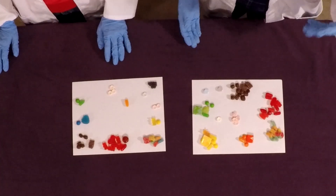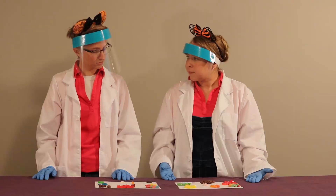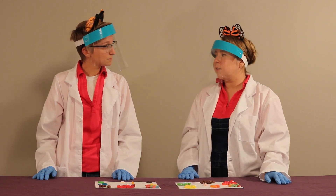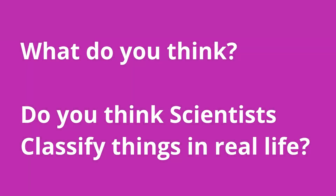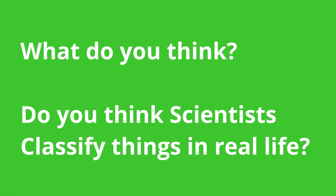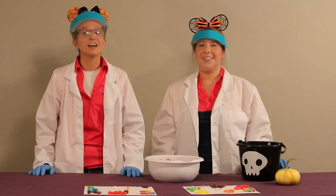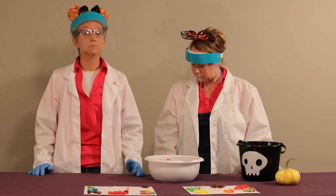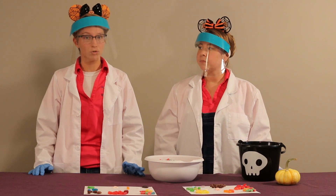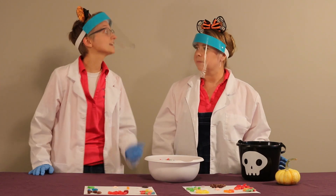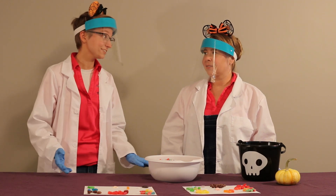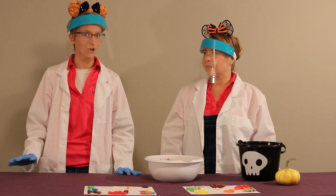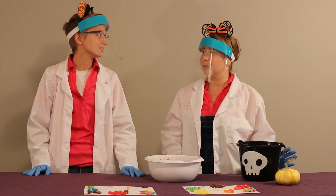Now our piles look very, very similar. They do. Do you think scientists sometimes have to do this? Yes, scientists classify things all the time. Some common things we see every day are animals. Like cats and dogs? Exactly. You wouldn't call a cat a dog, and you surely wouldn't call a dog a cat. But there are many different types of cats and many different types of dogs. And many different kinds of animals. Exactly.